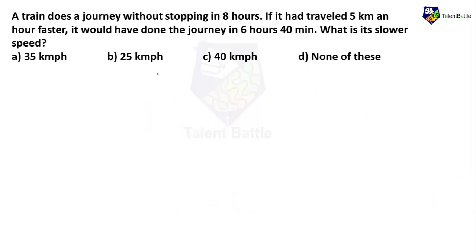A train does a journey without stopping in 8 hours. If it had traveled 5 km/h faster, it would have done the journey in 6 hours 40 minutes. What is the slower speed? This question belongs to time, speed, and distance. For such questions you can try to create equations and find what can be equated.